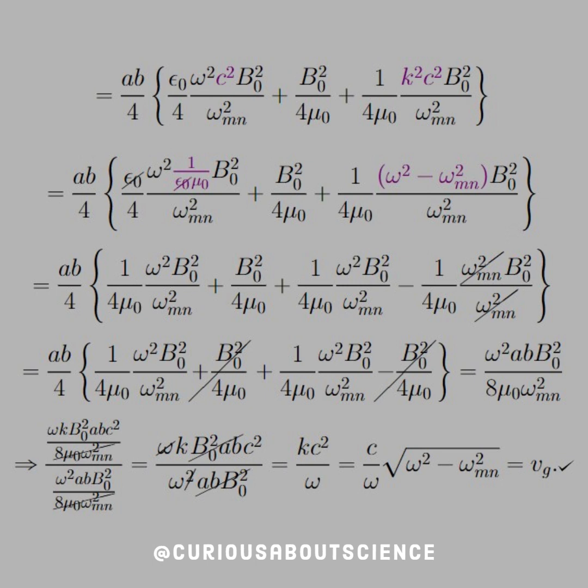So yeah, we have two fractions of the same thing. One over 4 mu naught omega squared B not squared over omega squared mn. And then four times four is 16, but then we have a fraction or two in the numerators that reduces to eight.